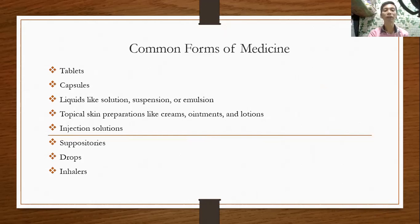We have common forms of medicine. First, we have tablets. We also have capsules. We also have liquids like solutions, suspensions, or emulsions. We also have topical skin preparations like creams, ointments, and lotions. We also have injections, suppositories, and last but not least, inhalers. Medicines are offered in accurate dosages and in convenient ways so that it is easier for consumers to take them.